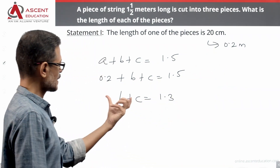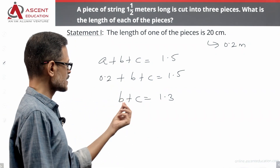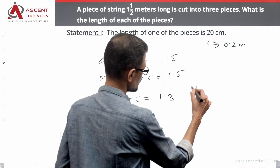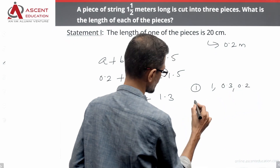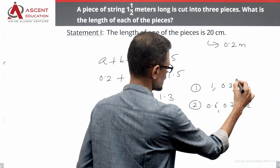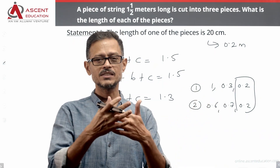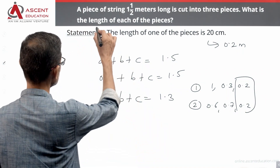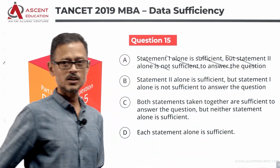One of the lengths is 0.2. It could be 1 and 0.3, which is one possibility. It could also be 0.6 and 0.7, which is another possibility. So possibilities are: {1, 0.3, 0.2} or {0.6, 0.7, 0.2}. We are not getting a unique answer with statement one alone.